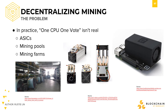Right now, one of the biggest features of Bitcoin, as well as other cryptocurrencies, is the fact that they can theoretically be mined in a decentralized manner. There's a reason we say theoretically, and it's because mining is tending towards becoming more and more centralized with the development of ASICs, mining pools, and mining farms.